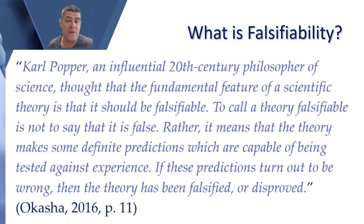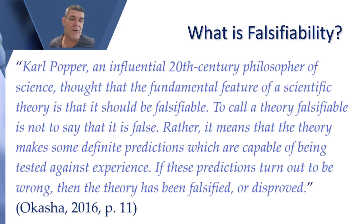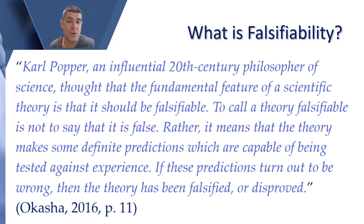Falsifiability was championed by Sir Karl Popper, an influential 20th century philosopher of science, who thought that the fundamental feature of a scientific theory is that it should be falsifiable. To call a theory falsifiable is not to say that it's false. Rather, it means that the theory makes some definite predictions which are capable of being tested against experience. If these predictions turn out to be wrong, then the theory has been falsified or disproved. We're going to look at the relationship between falsifiability and hypothesis testing in this video.